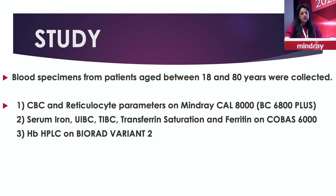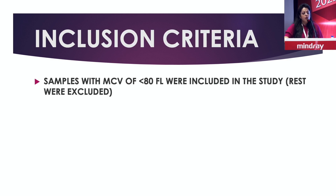The second part of our study was to find out the reticulocyte hemoglobin in thalassemic traits. We took a large number of samples and came down to about 200. We ran CBC and reticulocyte hemoglobin on the Cal6500, did serum iron, TIBC, transferrin saturation, ferritin, and HPLC. We selected only those patients where MCV was less than 80 — including only microcytic hypochromic cases irrespective of hemoglobin.